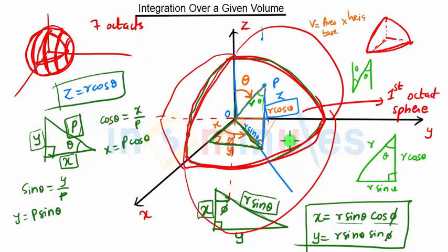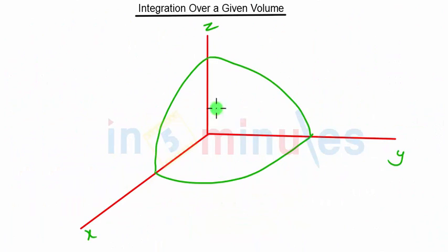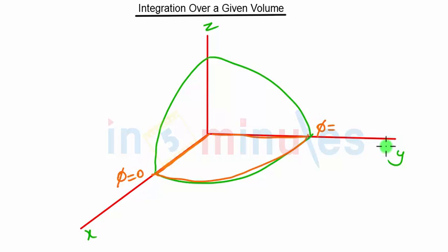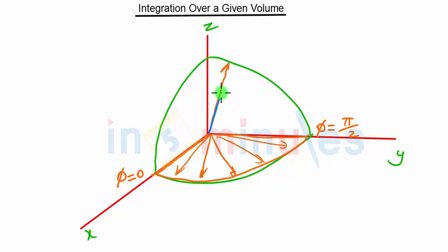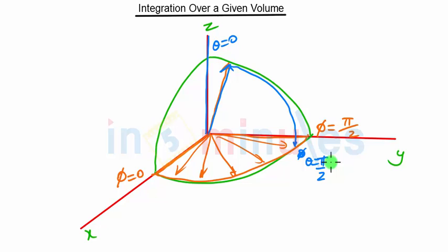We have the first octant of the sphere, and the seventh octant will be below and adjacent to it. For the first octant, φ goes from 0 to π/2, since X and Y axes are perpendicular to each other. Then we have angle θ, which also goes from 0 to π/2. These are the limits for the first octant of the sphere.